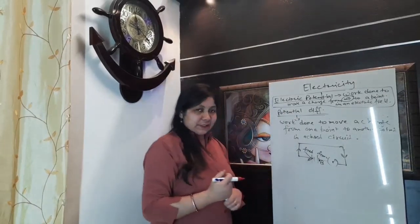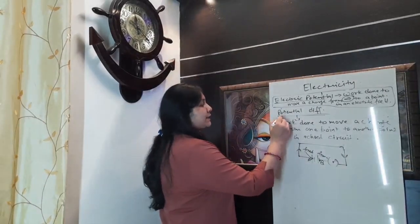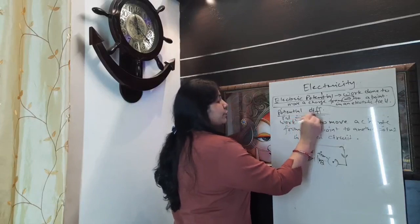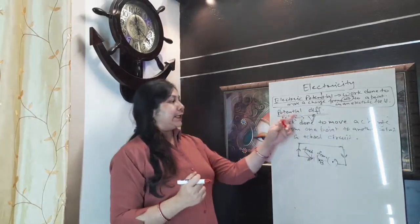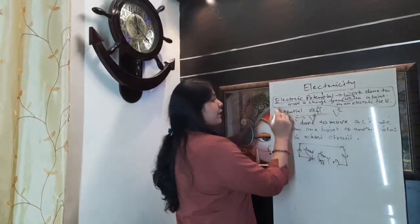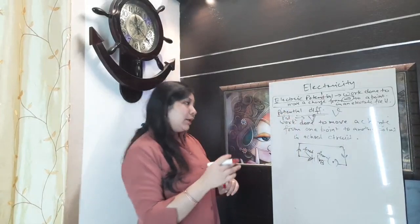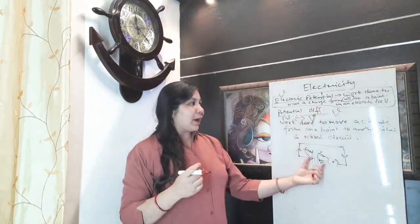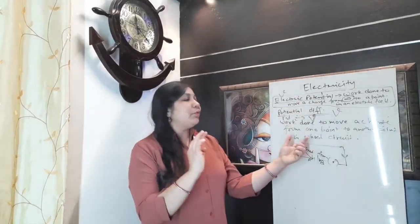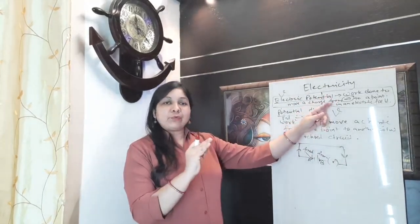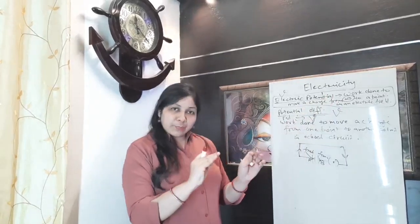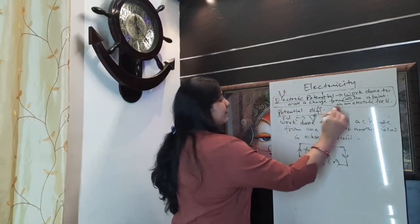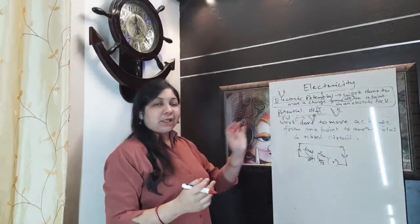Potential difference is represented as PD, or shortly as capital V. Electric potential is also represented as capital V. Both are represented the same way. The only difference is that in electric potential we are moving a charge from infinity to a point, and in potential difference we are moving a charge from one point to another point. In both cases we use capital V to represent electric potential as well as potential difference.